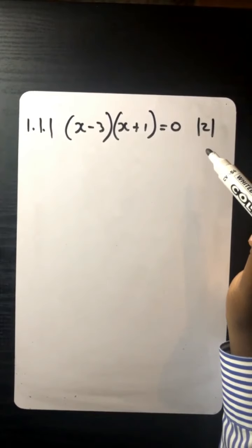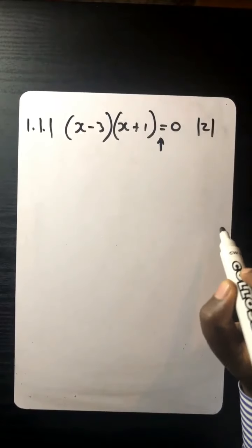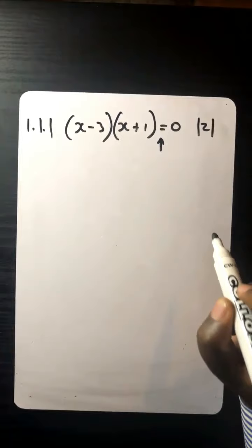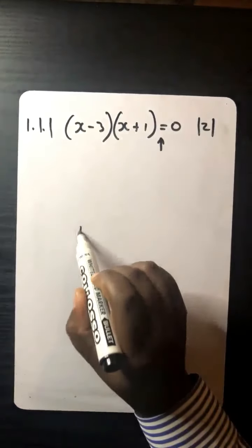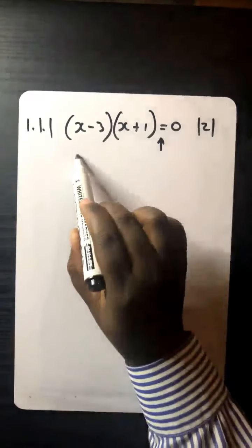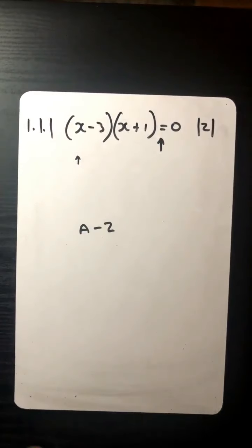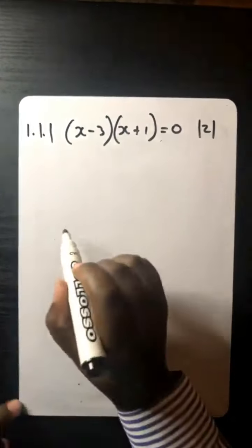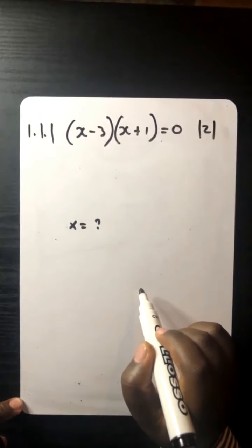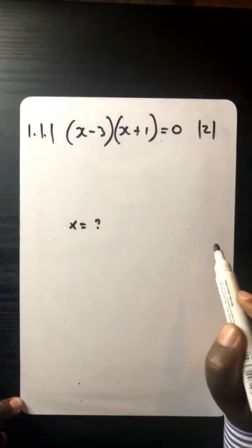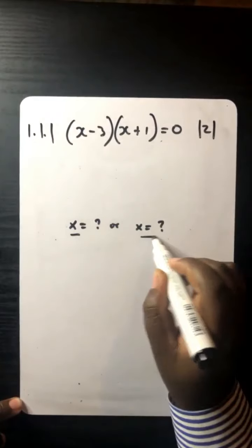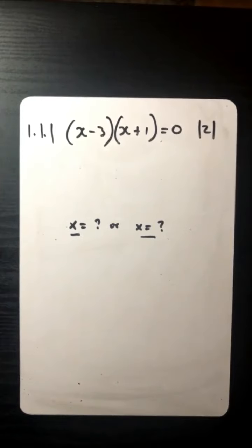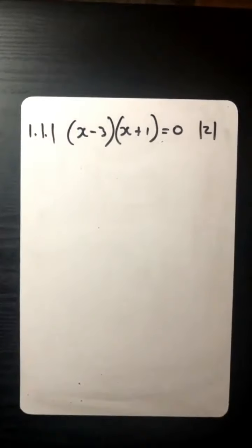When you have an equation, what do you do? You solve for the unknown. In this case the unknown is x, hence 'solve for x.' What does it mean when the unknown is x? It means in the end we must have x equals something. And because this is a quadratic equation, you are going to have two values of x.